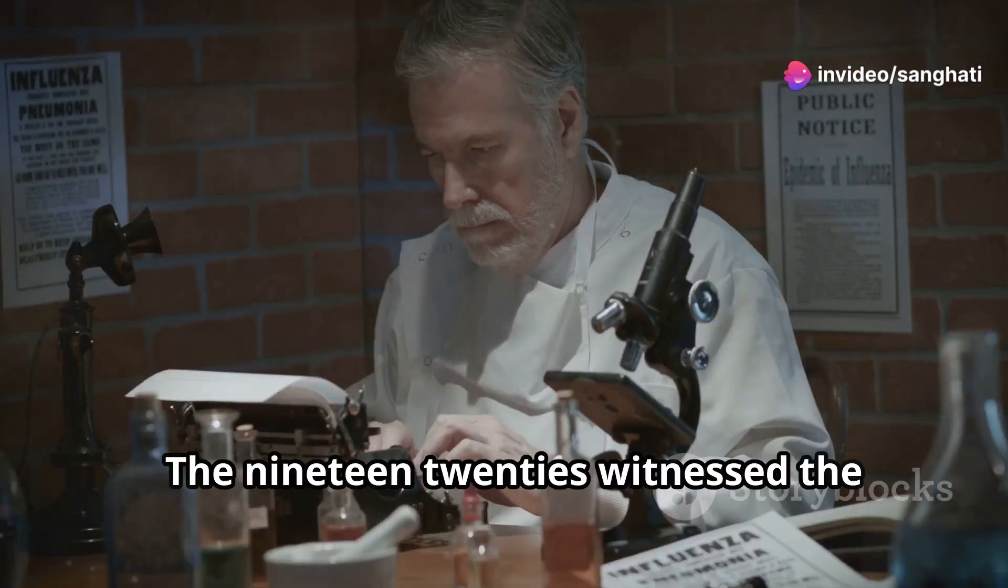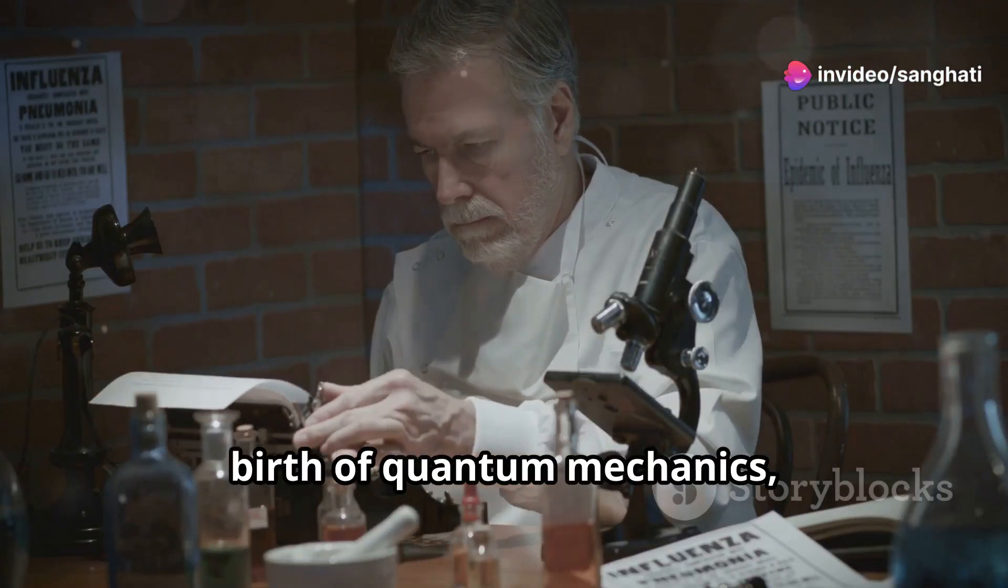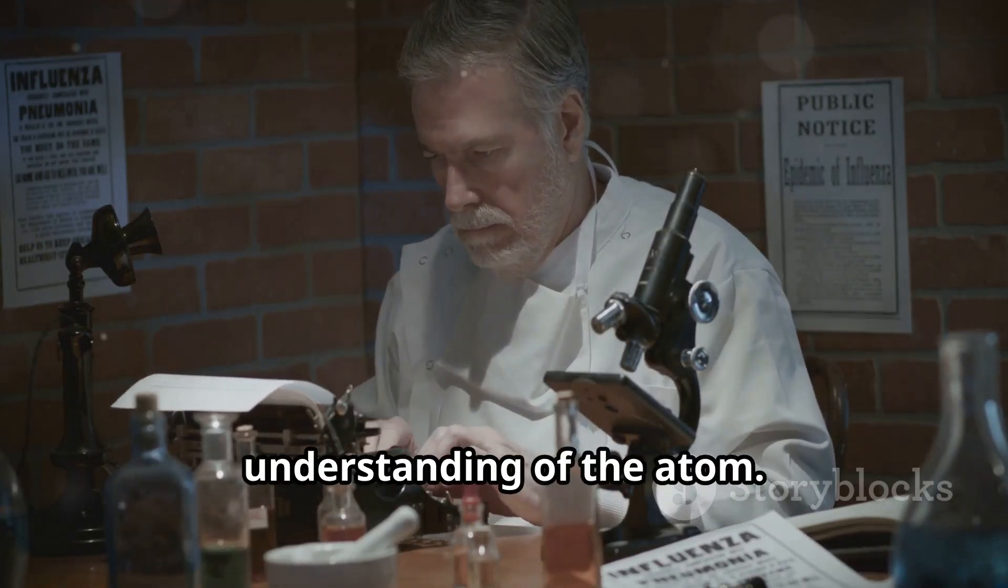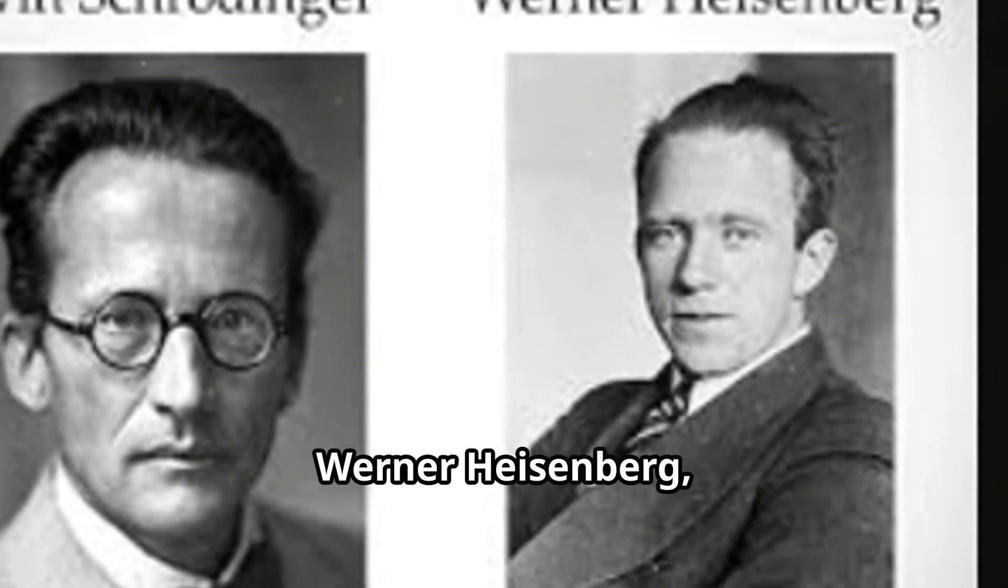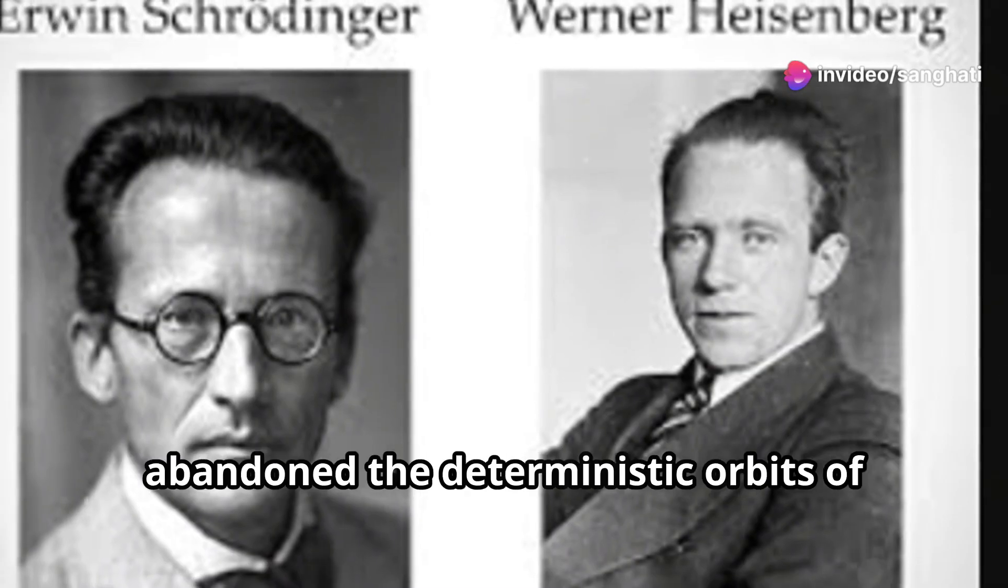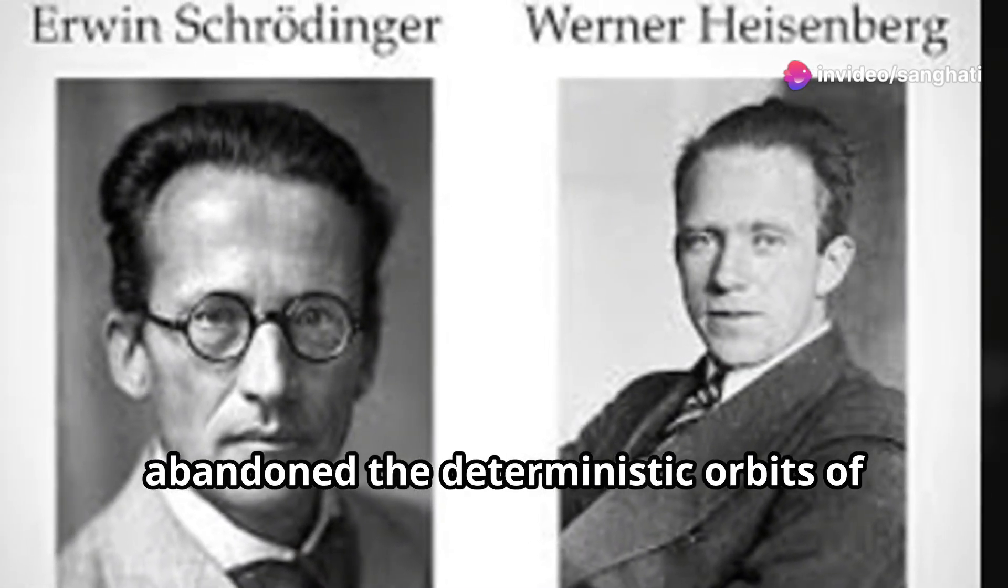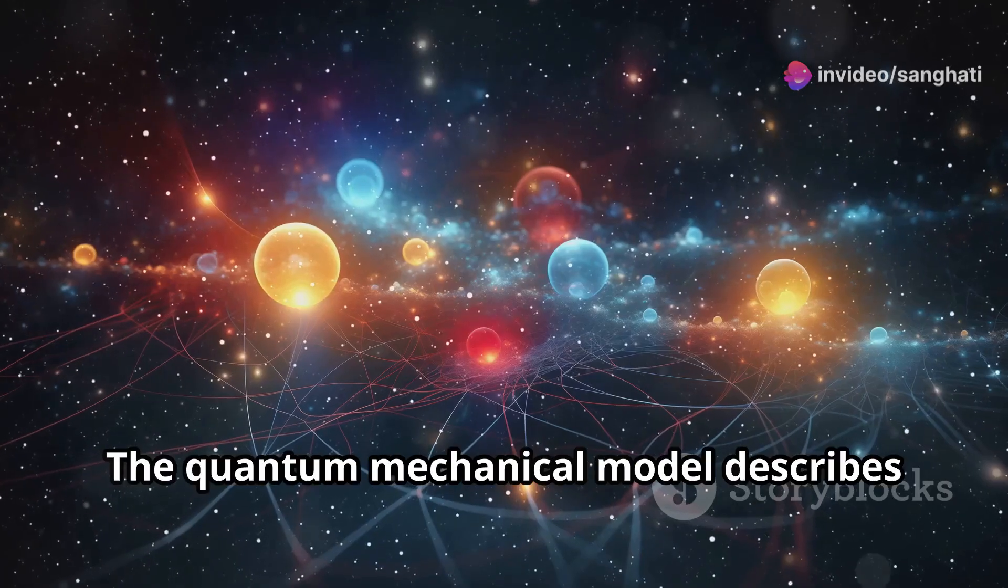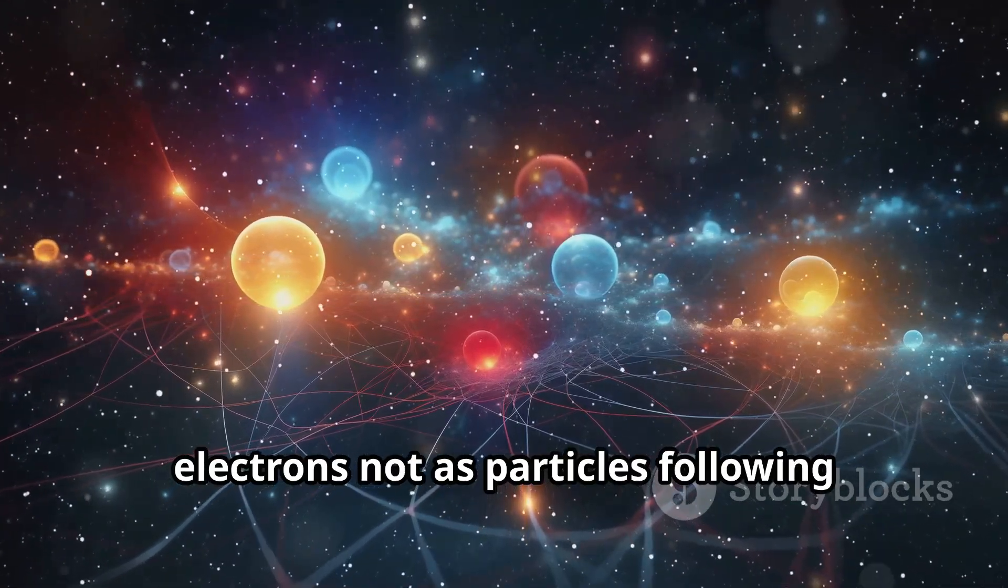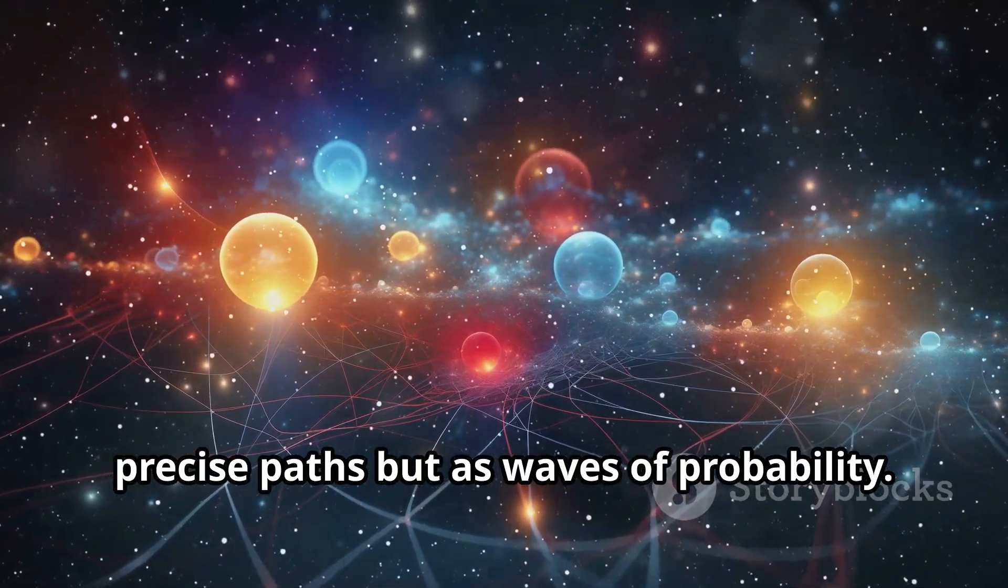The 1920s witnessed the birth of quantum mechanics, revolutionizing physics and our understanding of the atom. Scientists like Erwin Schrödinger, Werner Heisenberg and Paul Dirac developed a new model that abandoned the deterministic orbits of Bohr's model. The quantum mechanical model describes electrons not as particles following precise paths, but as waves of probability.